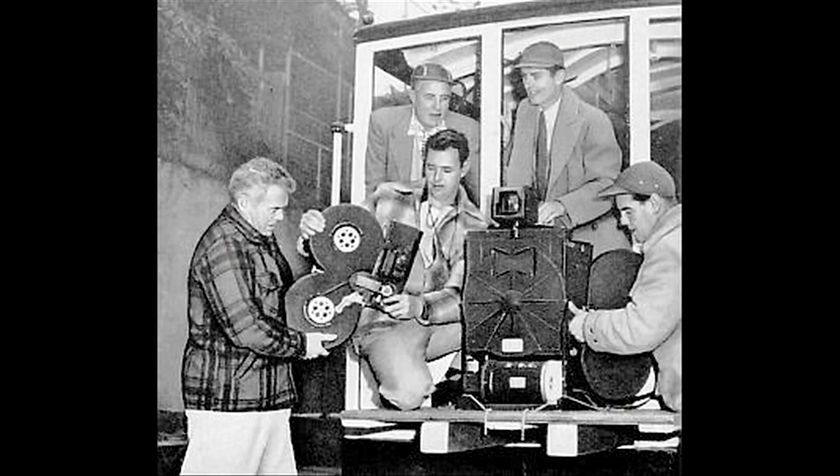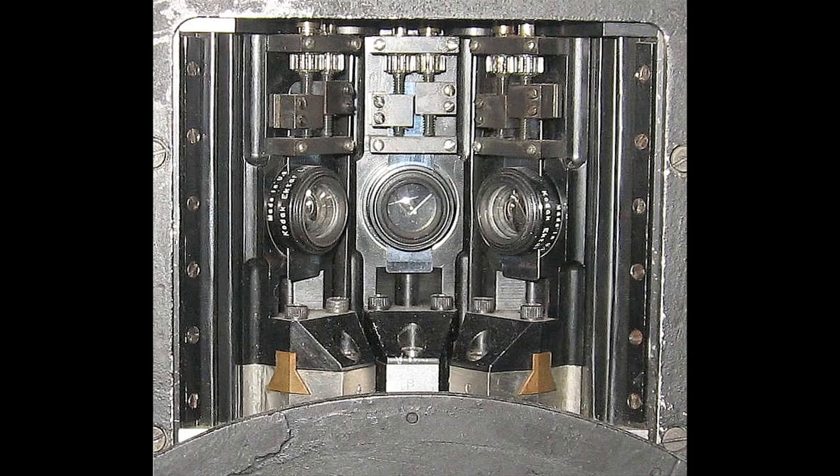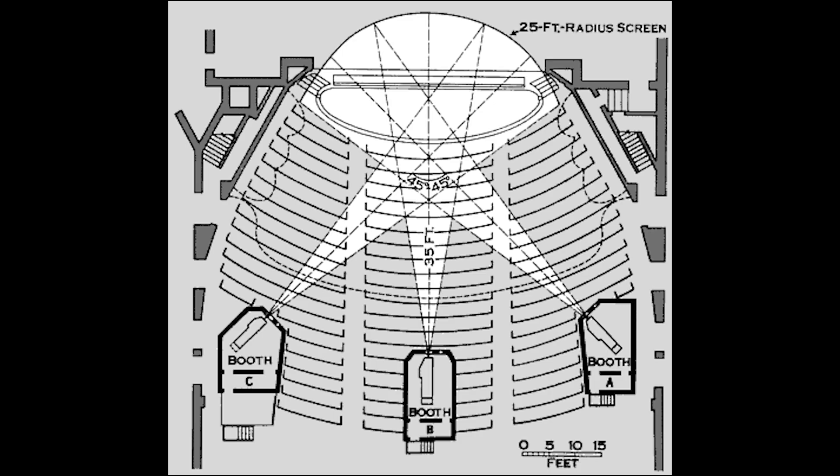There were two main ways that you could get this wider screen. First, the Cinerama, which used three cameras in one, side by side, all recording slightly different angles, and then projecting it back through three different projectors. This method worked, but it wasn't practical, cheap, or time effective.